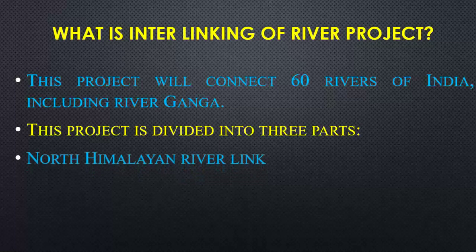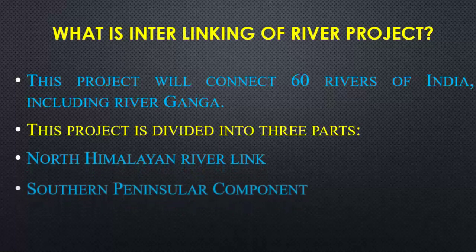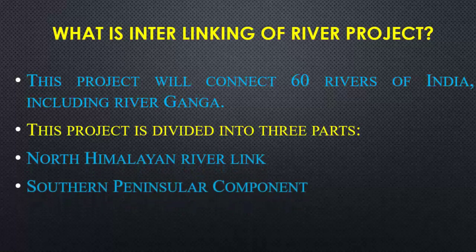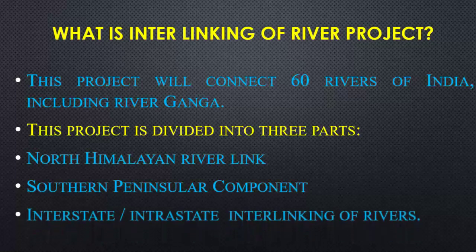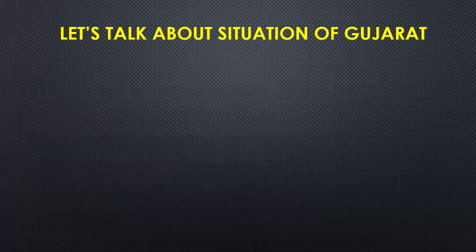This project is mainly divided into three parts: the North Himalayan River Link, the Southern Peninsular Component, and interstate and intrastate interlinking of rivers.